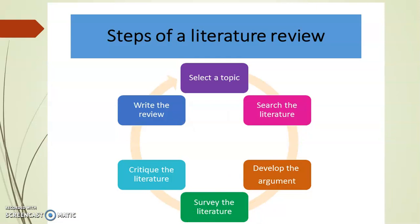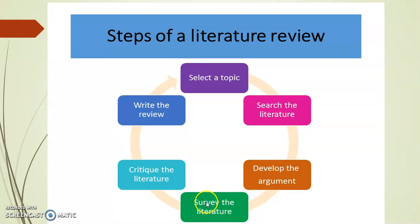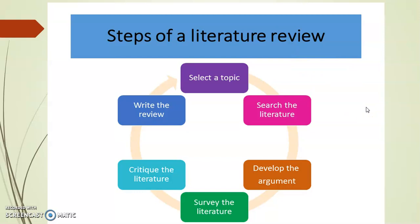Steps of literature review: whenever you select a topic, do a primary search of its literature — in your library books or any survey you conduct. Then develop the argument; with relation to that argument, again do a survey of literature. Then you will find some critics of the literature which you have to mention and remember for further studies. Then write the review. This process is continuous. It is already said that if you do a literature review very well, 50% of the project work is already done.